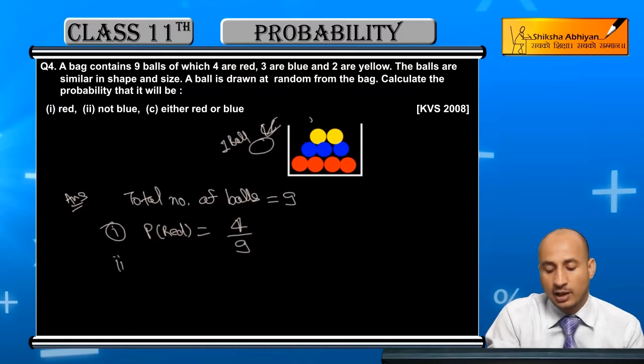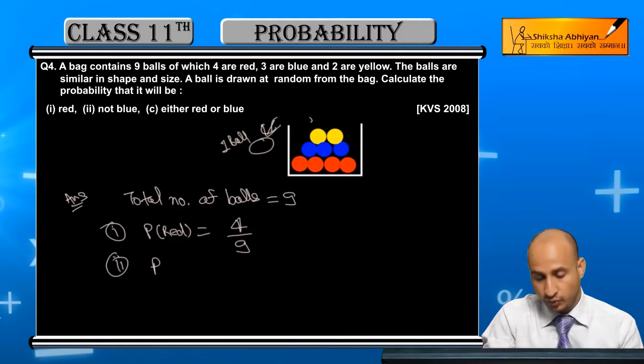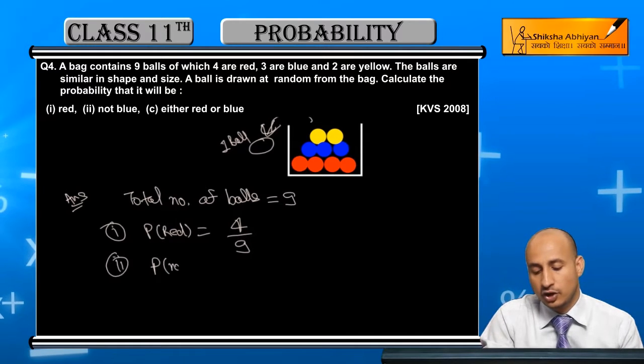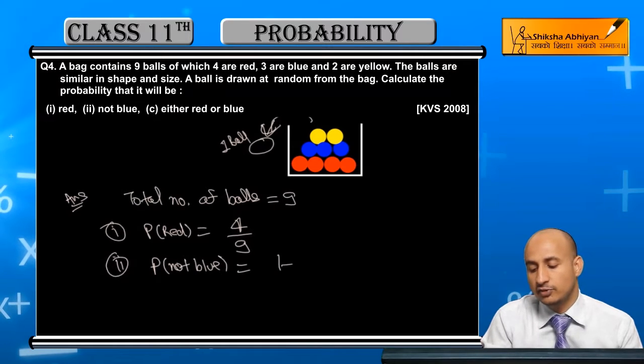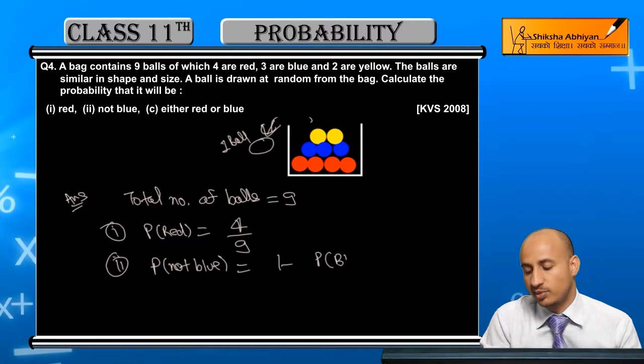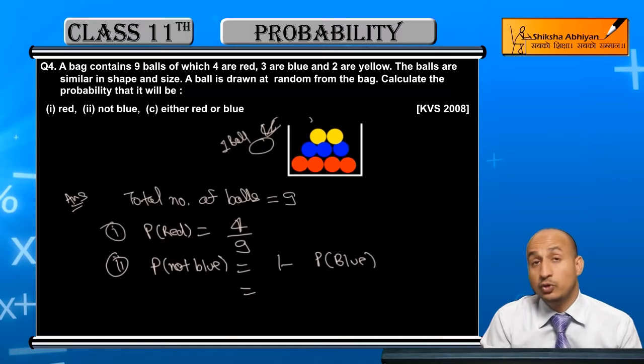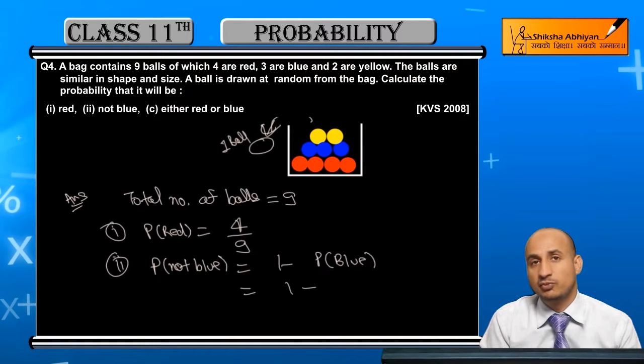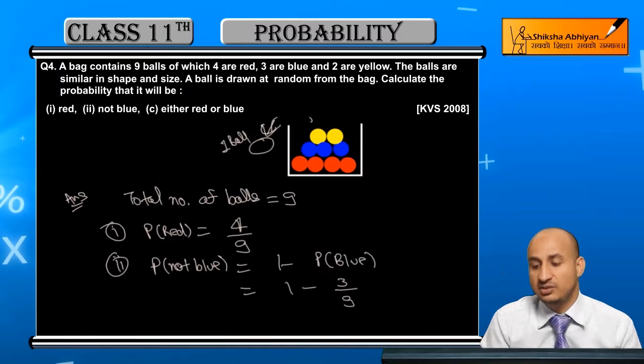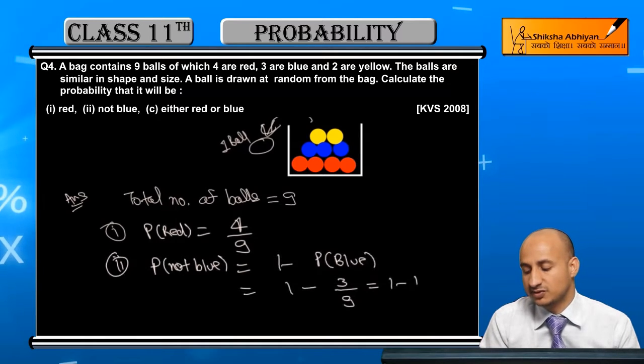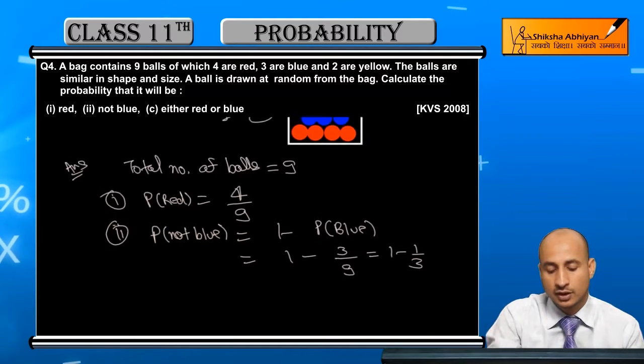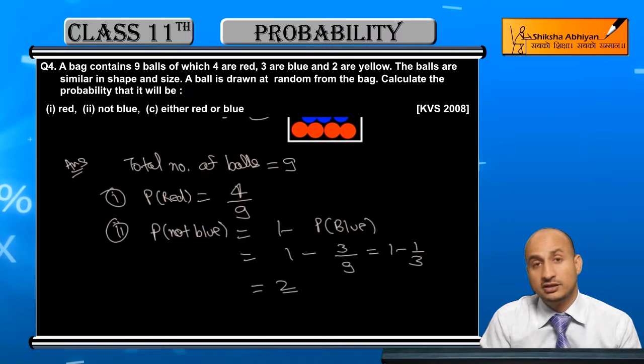And second part, probability of not blue. You have to be not blue. What should you do for that? You subtract from 1. The probability of blue is 3 upon 9. This is 3 by 9. That is equal to 1 minus 1 by 3, equal to 2 by 3. This is 2 by 3.